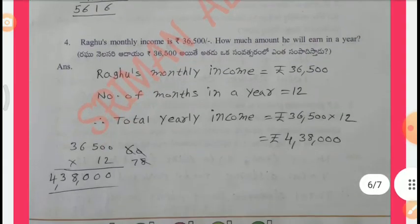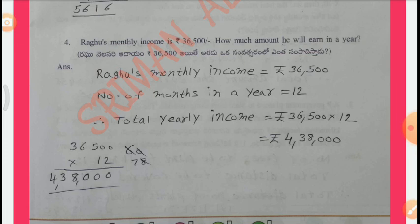Problem 4: Raghu's monthly income is Rs. 36,500. How much amount will he earn in a year? Solution: Raghu's monthly income = Rs. 36,500. Number of months in a year = 12. Therefore, total yearly income = Rs. 36,500 x 12 = Rs. 4,38,000.